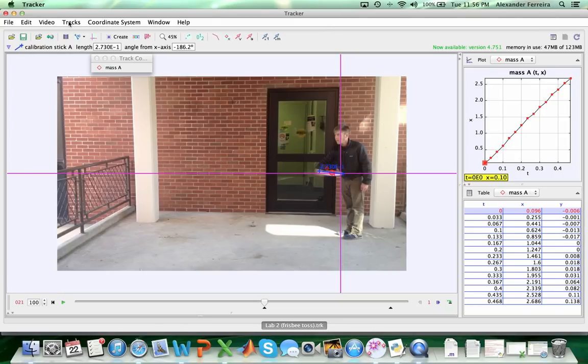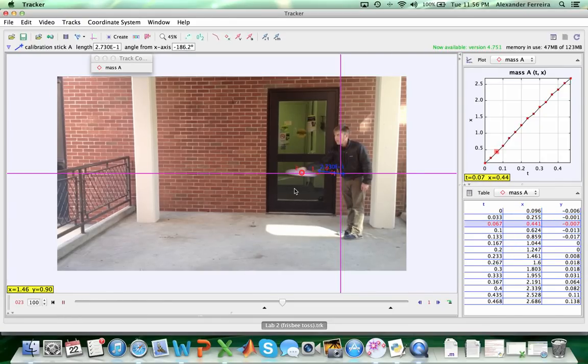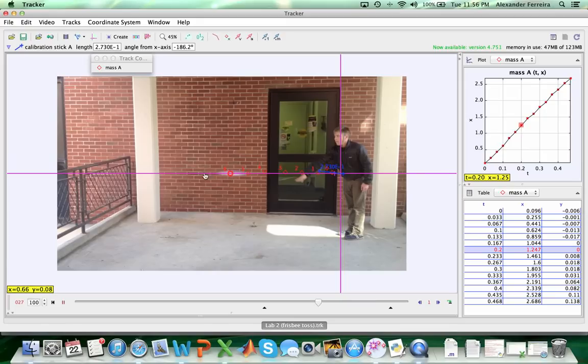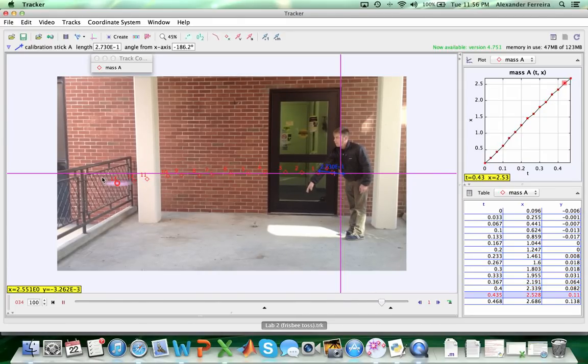So then the next thing I did was I went to Tracks, New, Point Mass, and I clicked frame by frame the center of the object to graph its position as a function of time. And it's cool because Tracker will allow you to actually do it frame by frame and get that data. So here is that track of my object. You see it's pretty horizontal motion in the X direction. A little bit here in the Y direction, a little bit of velocity, that's due to real net forces.